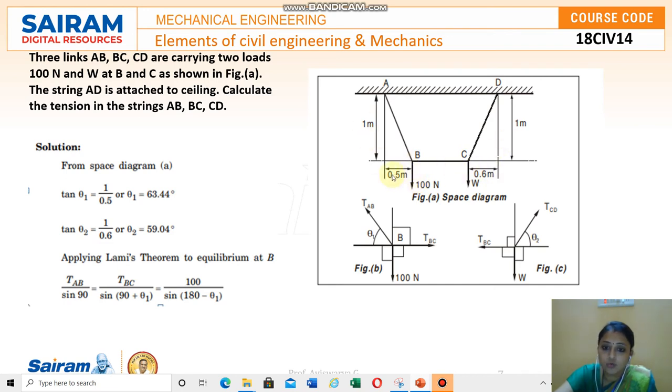In this FBD, the given diagram shows AD is attached to the ceiling and 100 Newton and W are the loads acting at B and C. They have given the dimensions: 0.5 mm, 1 meter, 0.6 mm, 1 meter. Just draw the FBD for B point first. Make the graph first and draw the arrow mark wherever you find cable. You can find the cable at BC and TAB. So name it TAB or TBA, and again TBC. Two cables, two tensile forces in joint B. Just mention it and mark the 100 Newton force. This is 90 degrees, but we do not know how much angle this side. You have to use tan theta formulas. Since you have opposite by adjacent it is better to use tan theta to find this theta. Name it as theta 1.